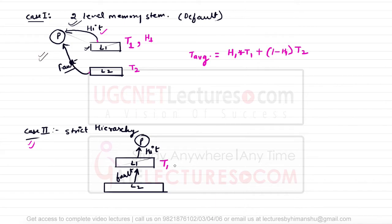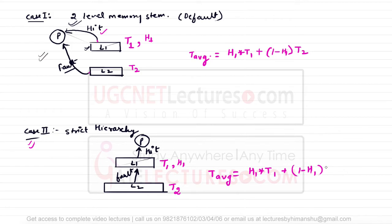For Case 2 (strict hierarchy), with the same variables t1, h1, and t2, the average time T_avg equals h1 × t1 plus (1 − h1) × (t1 + t2). The (1 − h1) term represents a miss, and on a miss we first copy data from Level 2 (time t2) into Level 1, then access it from Level 1 (time t1).